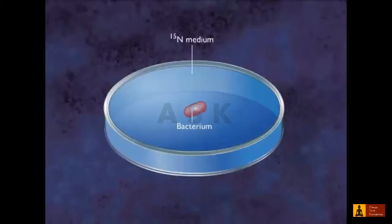The Meselson and Stahl experiment provides evidence for semi-conservative replication of the DNA molecule, where the two parent strands serve as the template for synthesis of new strands. In this experiment, bacterial cells were grown for several generations on a medium containing a heavy isotope of nitrogen, N15.